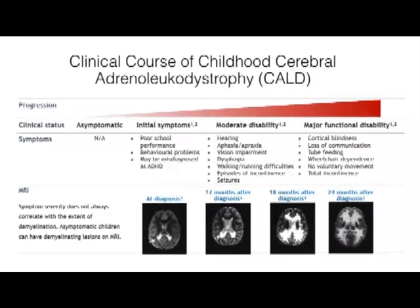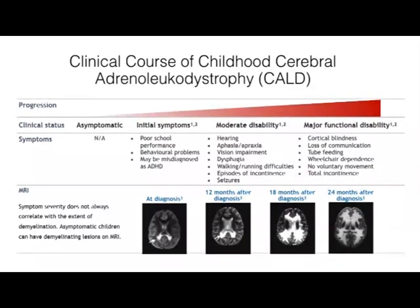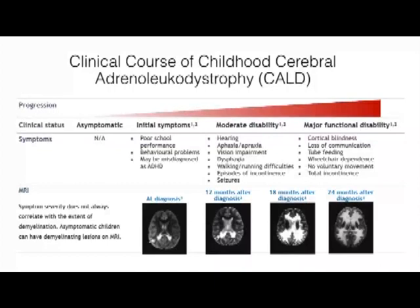Usually boys are asymptomatic until early school years and they show attention problems and hyperactivity, rapidly progressing to difficulties walking and talking, and are often in the vegetative state within a year or two. The MRI lesions precede the symptom progression, and you can usually see a confluent white matter lesion starting in the splenium of the corpus callosum and spreading out into the subcortical white matter.